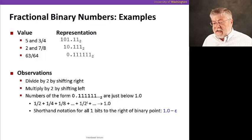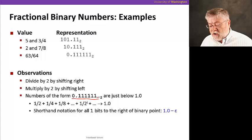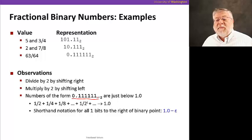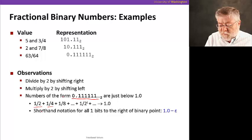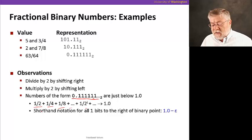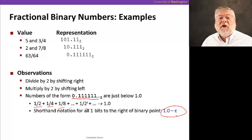One other observation to note is that numbers that are of this form, with these leading trail of ones, are just below the value one point zero. Because if we had a little bit more, then they would be just equal to one. So if we added one-half plus a fourth plus an eighth plus a sixteenth, and so on, infinitely far down, we would approach one but never quite get there.